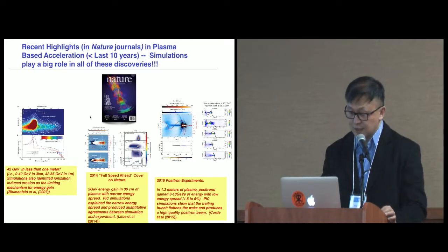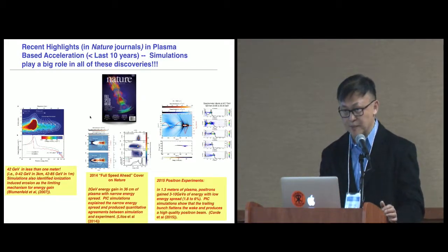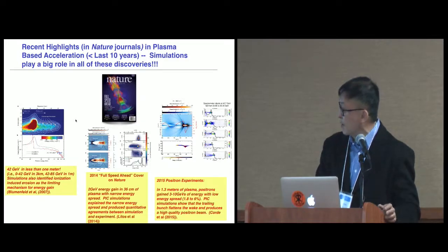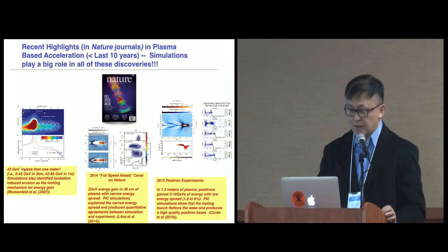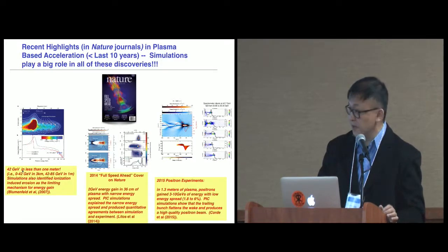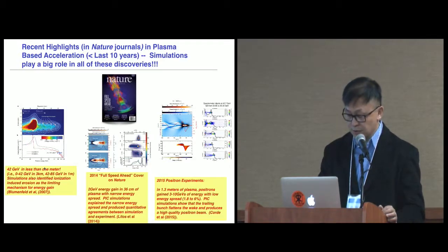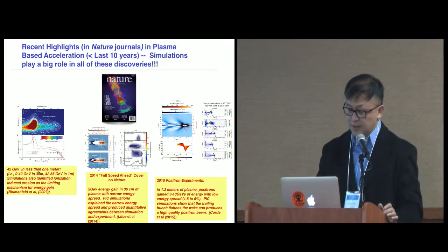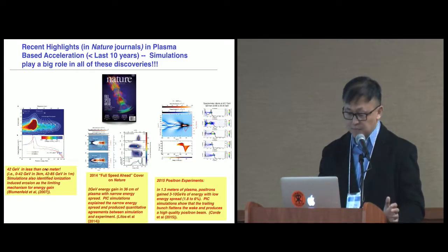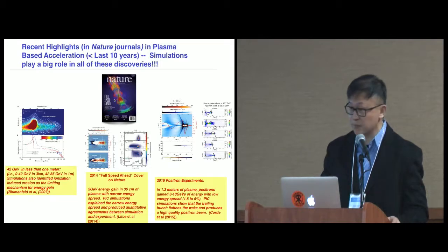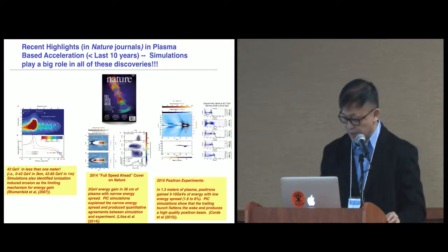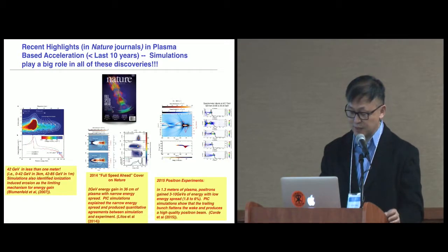These are the experiment and simulation results that have appeared in Nature over the past 10 years. Due to time constraints, I'll just point out some highlights. In 2007, we showed that a 40 GeV electron beam — which takes three kilometers of conventional accelerators to generate — can have its energy doubled using just one meter of plasma, demonstrating fields three orders of magnitude larger than conventional accelerators. Also notably, in 2014, simulation results done on Blue Waters appeared on the cover of Nature.